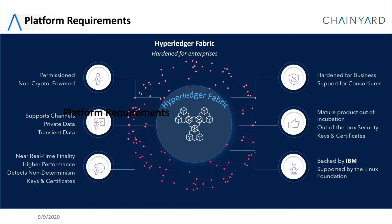On the other side, Hyperledger Fabric is very hardened for business — it provides native support for consortiums, security through a certificate authority that issues keys and certificates, and member services that sign and verify transactions. Out of the box, you also get security aspects like identity mixer. The product has been mature since version 1.0 back in 2017 and has gone through several cycles of maturity. Last but not least, this product is backed by IBM and supported by the Linux Foundation, making it a very attractive platform for permissioned enterprise blockchain problems.